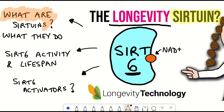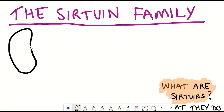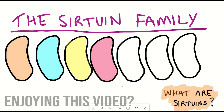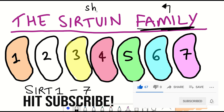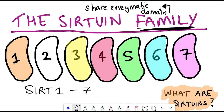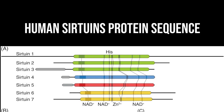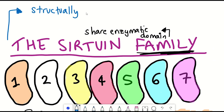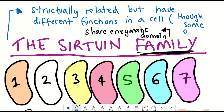So what are sirtuins? Sirtuins are considered a family because in mammals, including us, we have seven different sirtuins, conveniently called Sirtuin 1 to Sirtuin 7. The reason they are a family is because these proteins all share an enzymatic domain, but they have differences at either end of their protein sequence that recruits them to different parts of a cell and influences what other proteins and molecules they interact with. So the different sirtuins are structurally related but can perform different functions within a cell, although for some of them their activities do overlap slightly.